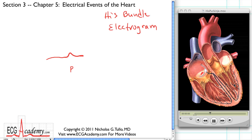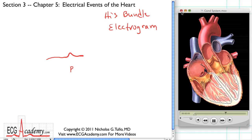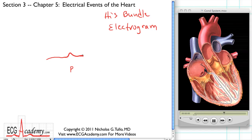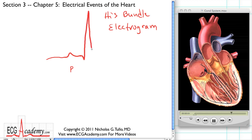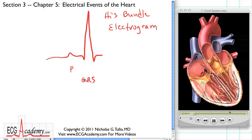When the Purkinje fibers fire, the ventricular myocardium gets the signal and fires. You get action potentials from millions and millions of cells, and that's what generates the ECG signal from the ventricles. When the ventricles fire, there's a very characteristic appearance to the signal — most people would recognize it as the signal the heart gives off when it beats. We refer to this as the QRS complex, and I'm going to get into more detail about how we name it.